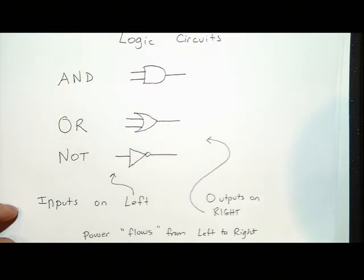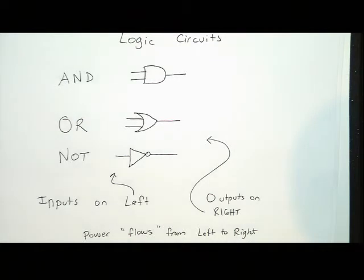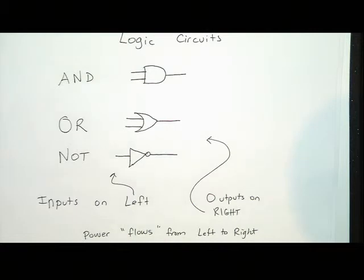We're going to do an introduction to logic circuits now. We've referred to them a lot, but we actually haven't drawn any. Here's what our logic gates look like: for AND, it looks like a big D-shape. For OR, it's the same but pointy with a rounded back. The NOT is a little triangle with a circle on the front — the circle is the most important part. For each of these, voltage comes from the left, current flows left to right, inputs are on the left and outputs are on the right, just like truth tables.